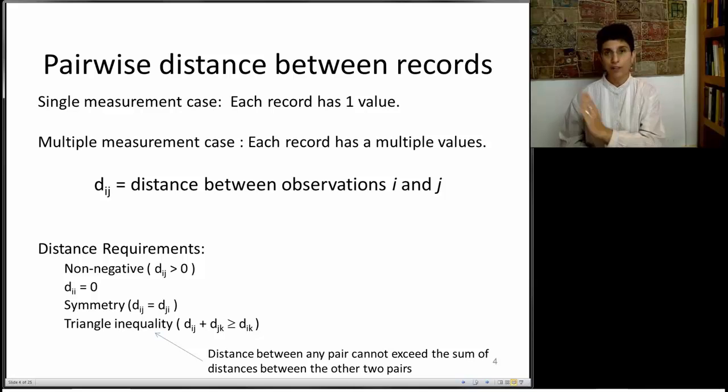What happens when we move to multiple measurements? Now we're going to have a profile for each record with multiple measurements, and we have to define a multivariate distance. We're going to use d sub ij to denote a distance between records i and j. And generally you can use any distance that you like. Usually we prefer distances that adhere to requirements such as being non-negative, a distance of a record to itself is zero, a distance between record i and j is equal to the distance between j and i, that's called symmetry, as well as the triangle inequality.